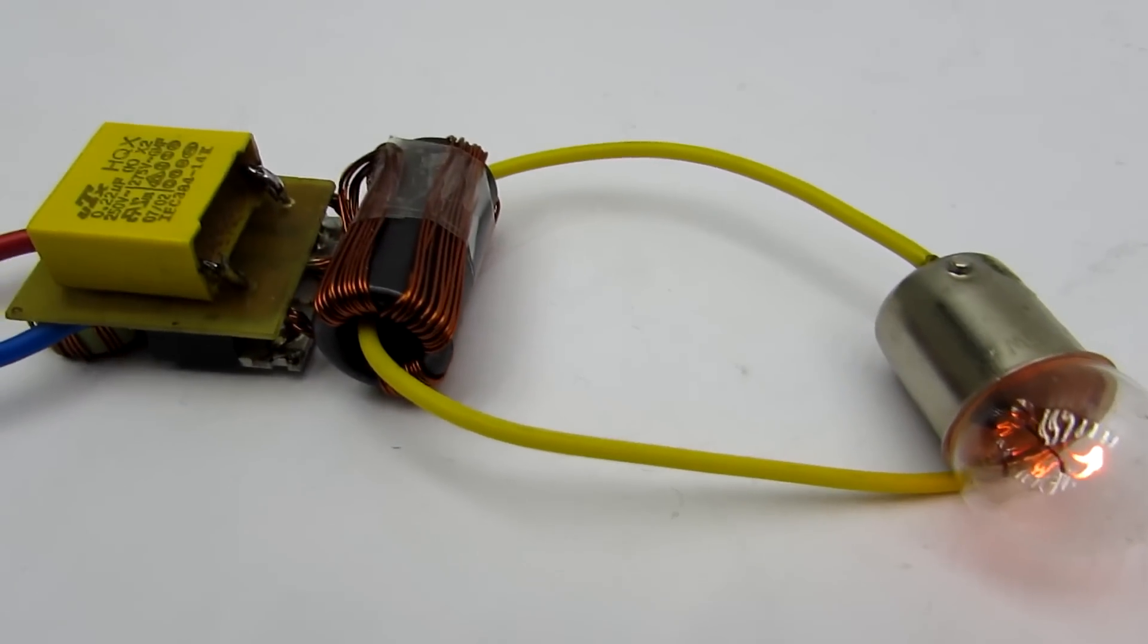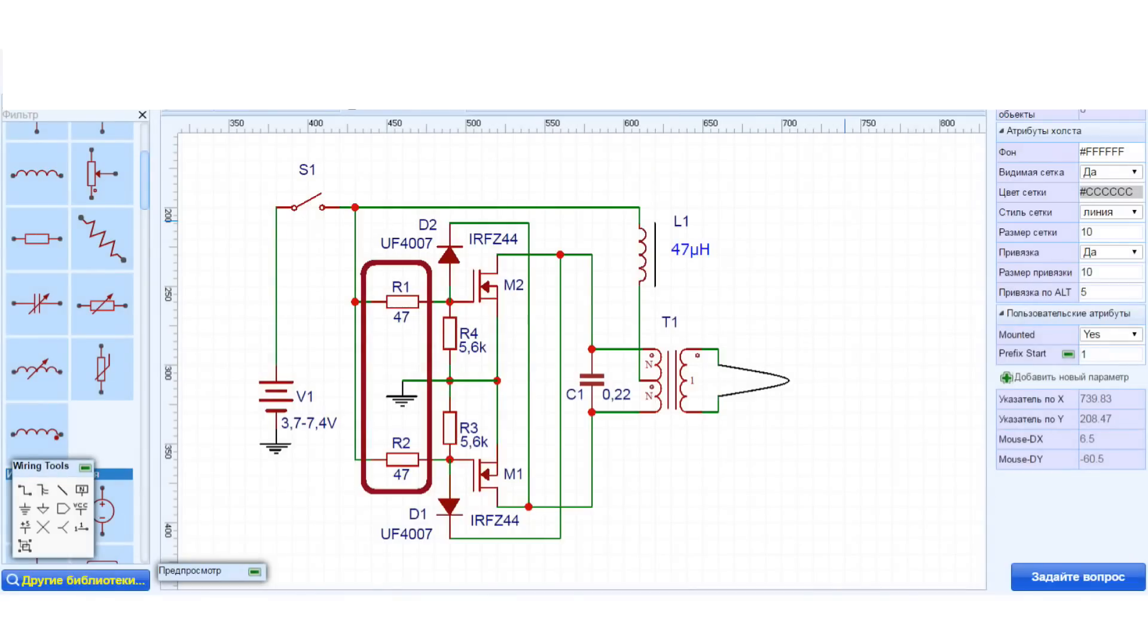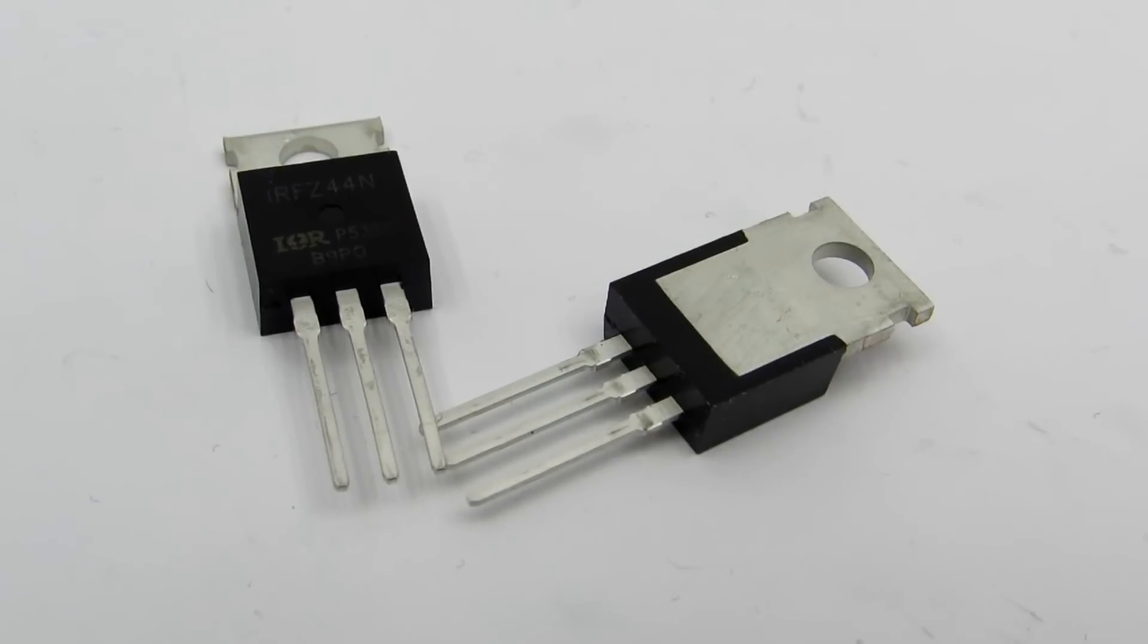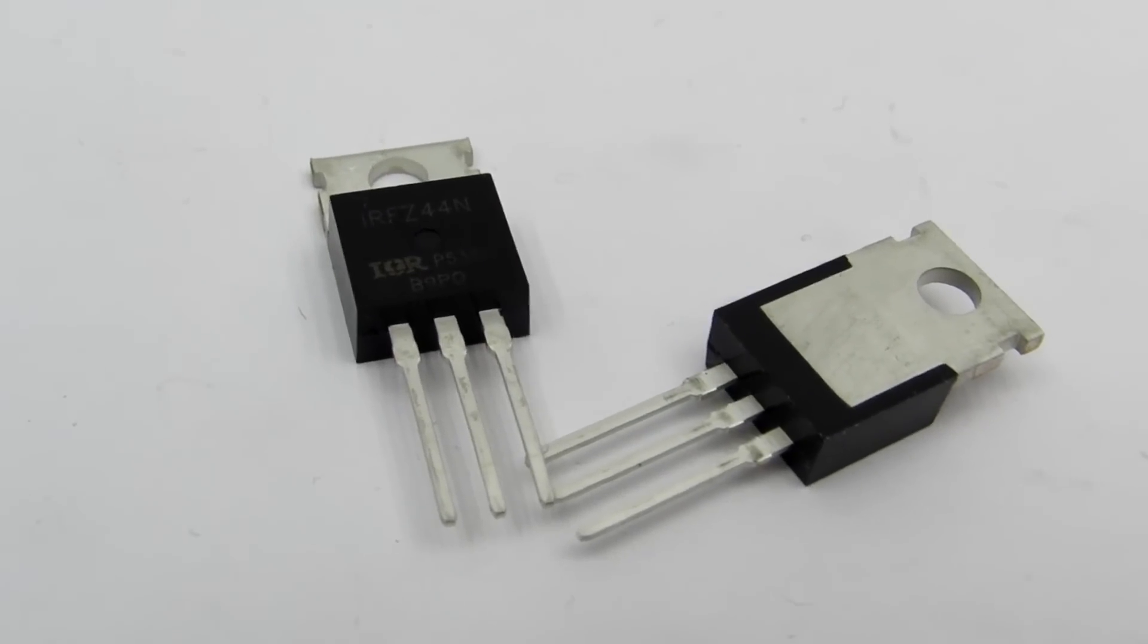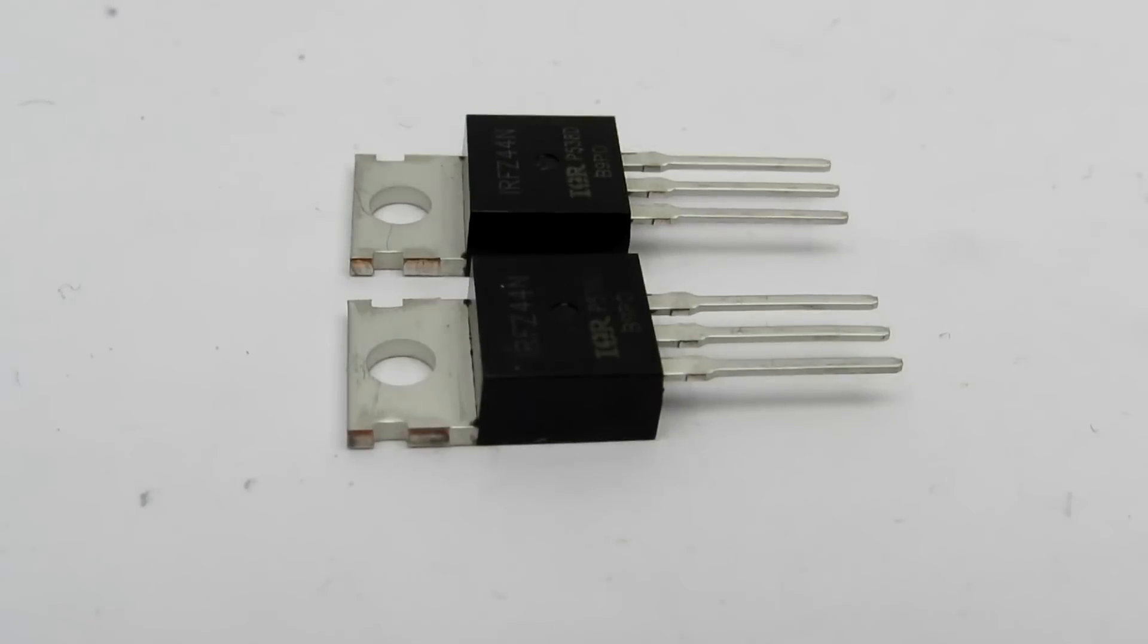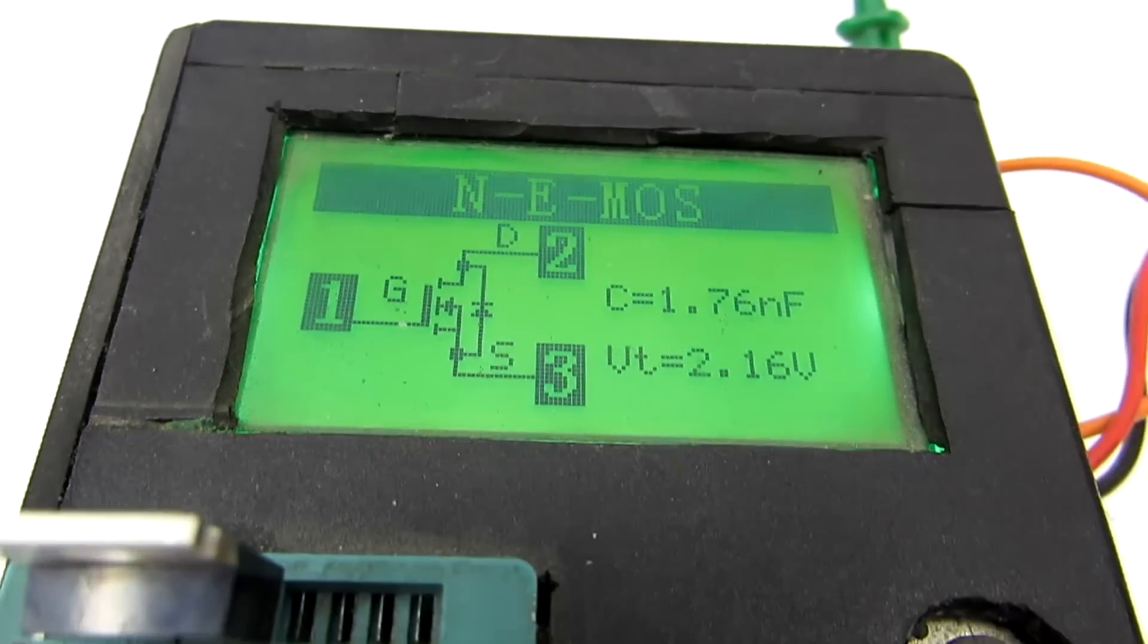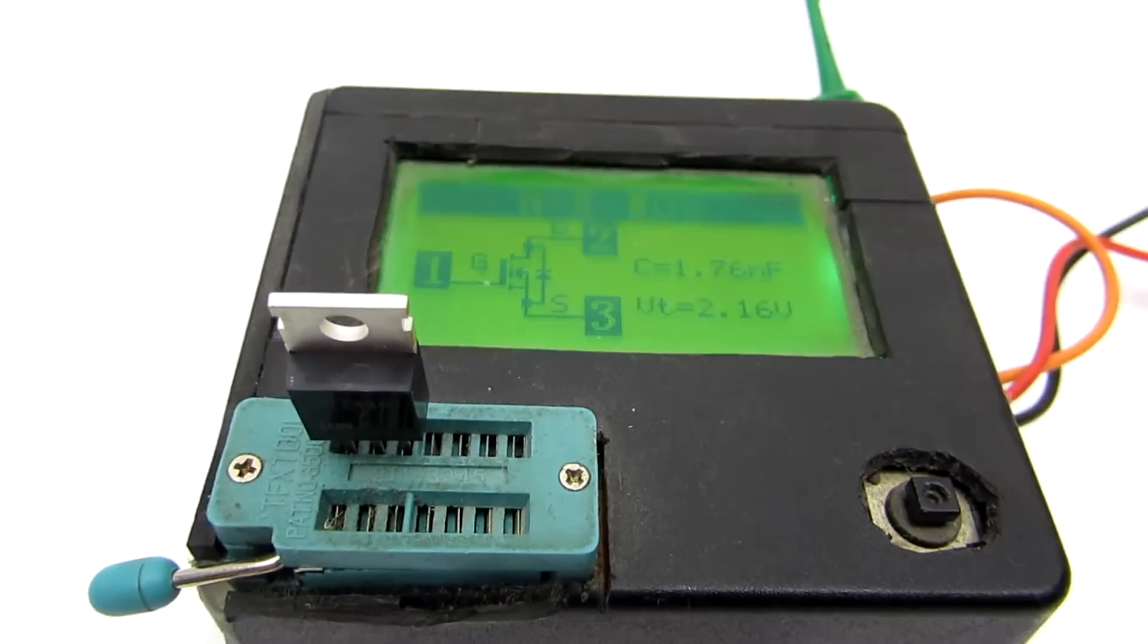Perhaps Zeners could save the situation. But in this case, it is necessary also to increase the resistance of the limiting resistors. Then suddenly helped fake Chinese RFZ44 transistors. I buy them regularly, but in 70% of cases, they are false. The device showed that their operating voltage is about 2 volts. Just what we need.